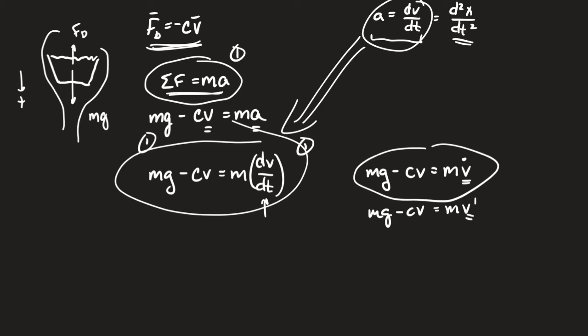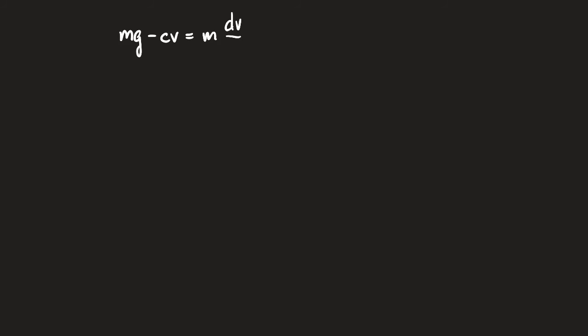Creating a differential equation is usually its own part of the problem, but almost always after you create one you'll be asked to solve it. Solving a differential equation isn't getting a number — it's getting a relationship. They want velocity as a function of time; they're asking you to derive a motion equation. Newton's laws are destined to create motion equations. I want the motion equation that describes how the object goes from rest to reaching terminal velocity.